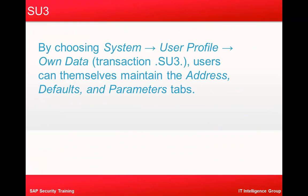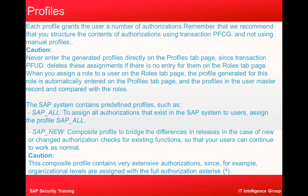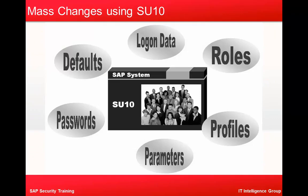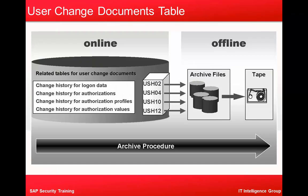By using the SU03 transaction, the user can maintain their own master data — basically their own address related information. Each profile grants the user a number of authorizations. It is recommended that you structure the contents of authorization based on the organization structure. You can also do mass changes using SU10, where you can change logon data, roles, profiles, parameters, defaults, etc.